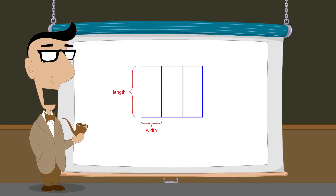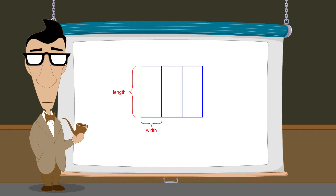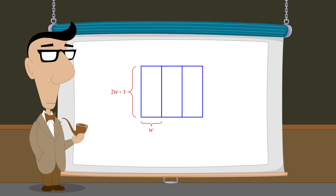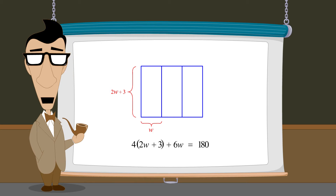Although this problem has two unknowns — the length and width of a pen — we are able to express both unknowns in terms of a single variable w. We can then combine these expressions to create a single equation. But instead of creating a single equation with one variable, this problem can also be solved by creating a system of two equations in two variables. To do this, we assign two variables, l and w, to represent the length and width of a pen.